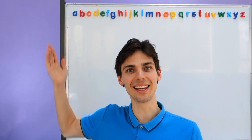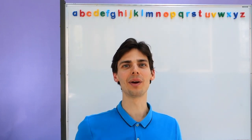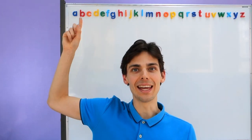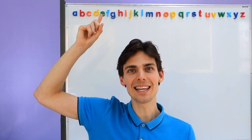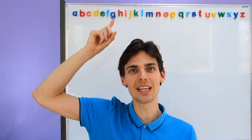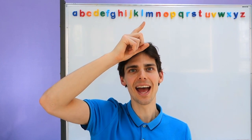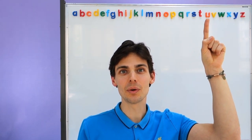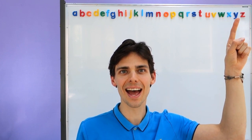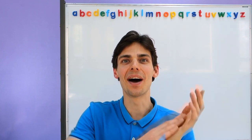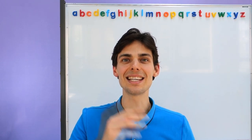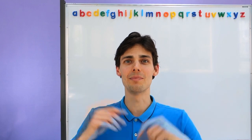Today we're going to start by singing the alphabet song. We have A, B, C, D, E, F, G, H, I, J, K, L, M, N, O, P, Q, R, S, T, U, V, W, X, Y, and Z. Now I know my ABCs. Next time won't you sing with me?